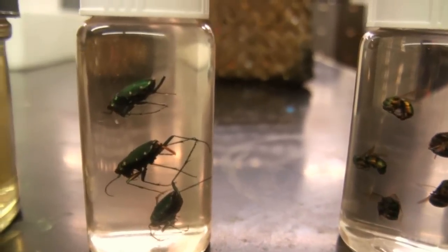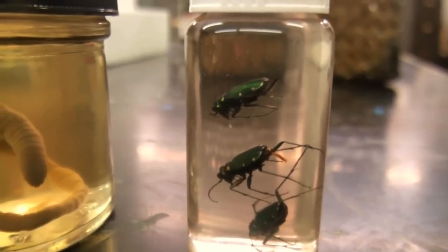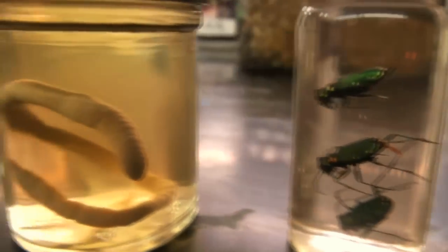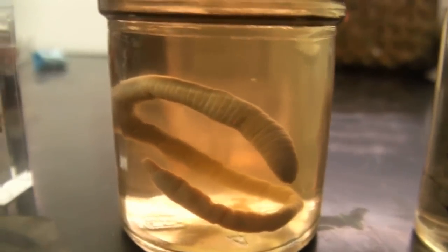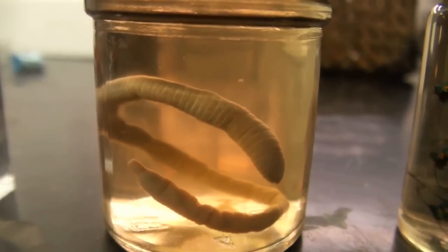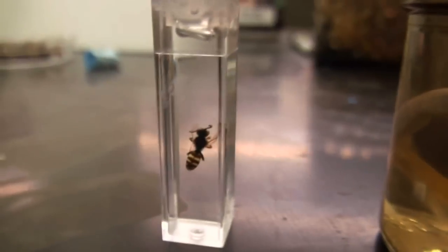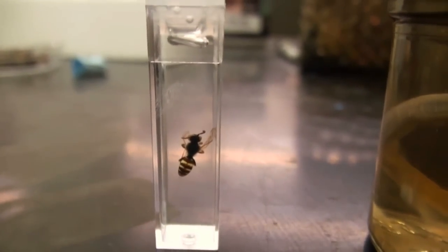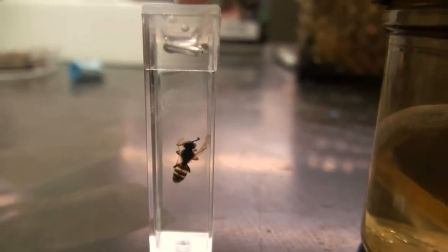Then the next one is a set of tiger beetles, and the next one after that is a worm of some kind. And then the very last one is a nomada type of parasitic bee. And this is what we're going to concentrate on.